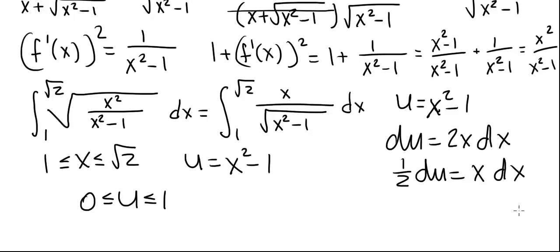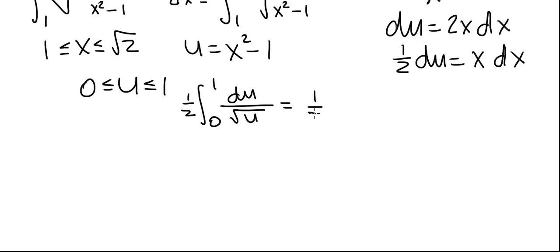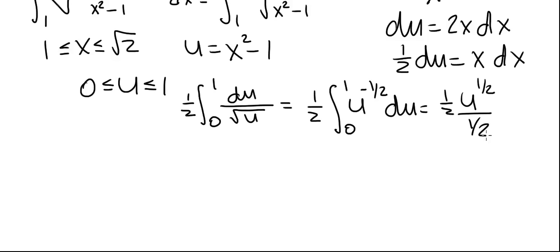We can now express this as an integral in the variable u. It's going to be the integral from 0 to 1: x dx becomes one half du, and the square root of x squared minus 1 becomes the square root of u. This is also an improper integral since 1 over square root of u is undefined at 0. Nevertheless, we integrate: this is one half times the integral from 0 to 1 of u to the minus one half du, which equals one half times u to the one half divided by one half, evaluated from 0 to 1. The one halves cancel, and plugging in 1 and 0 into square root of u gives the final answer: the arc length is equal to 1.